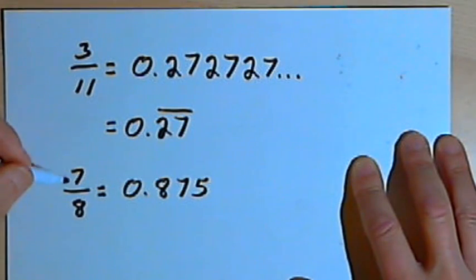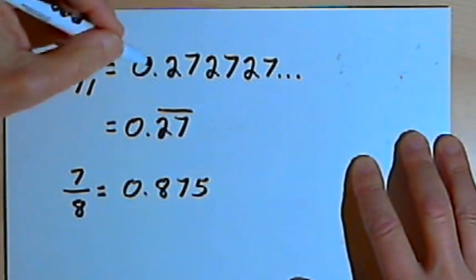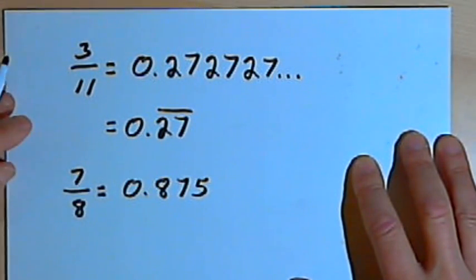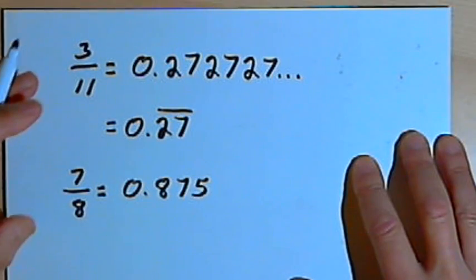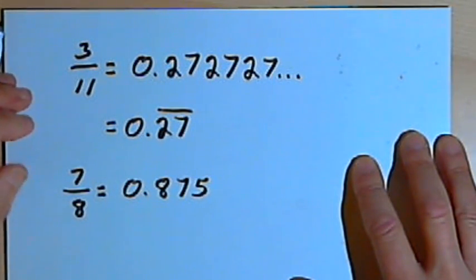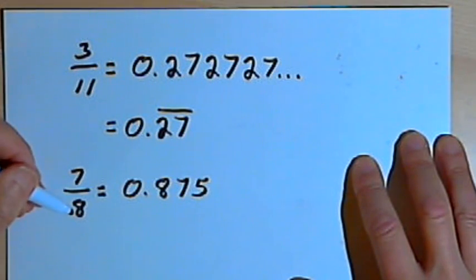Now there's a general rule of thumb that tells you how to know whether you're going to end up with a repeating decimal or a terminating decimal. The rule of thumb goes like this: Take your fraction, reduce it to lowest terms. Once it's reduced to lowest terms, factor the denominator.